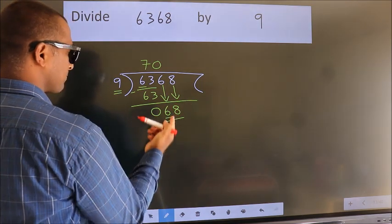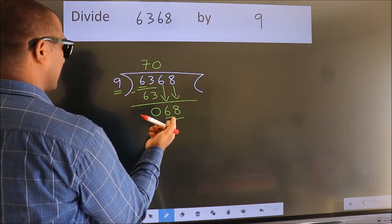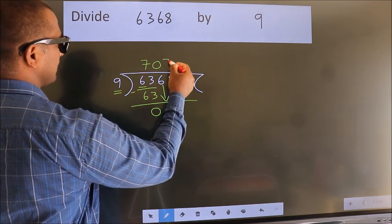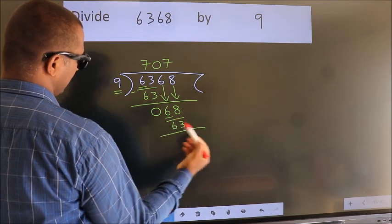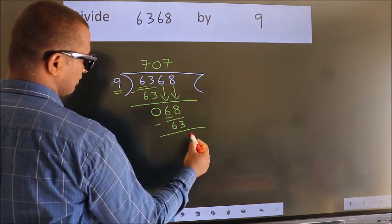So, 68. A number close to 68 in 9 table is 9 7s, 63. Now, we subtract. We get 5.